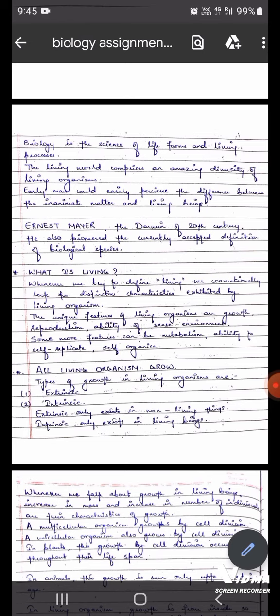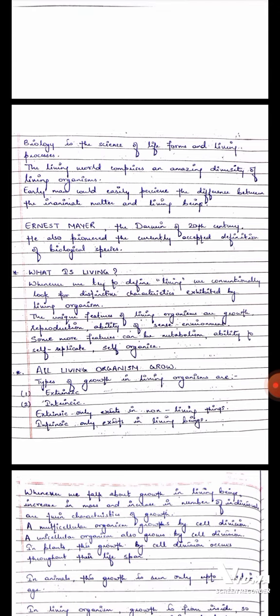Now we'll come on the man who pioneered the currently accepted definition of biological species. His name was Ernst Mayer and he was also known as the Darwin of 20th century. Like you can see in the notes, Ernst Mayer, the Darwin of 20th century, he pioneered the currently accepted definition of biological species.